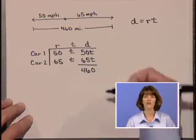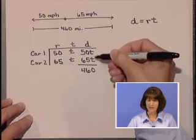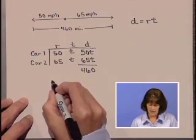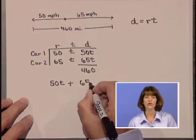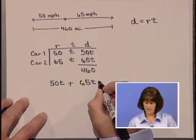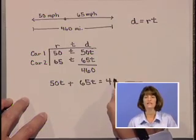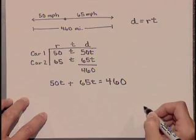Our equation is going to come from this last column, where we sum these distances, and let the distance of car one, 50T, plus the distance of car two, 65T, equal that total distance of 460 miles.